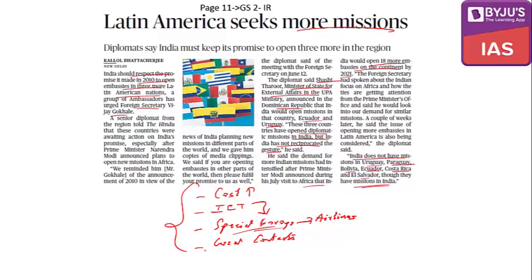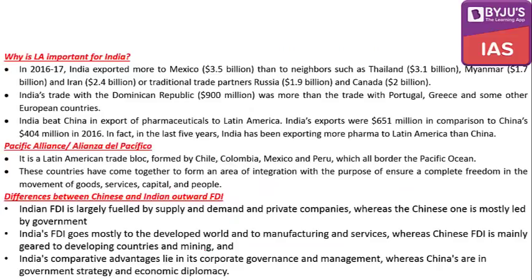However, looking at the other side — why an embassy IS required — let's examine the statistics. In 2016-17, India exported more to Mexico than to neighbors like Thailand, Myanmar, and Iran, and traditional partners like Russia and Canada. Mexico received about $3.5 billion in exports, more than Russia and Canada. India's trade with Dominican Republic also exceeded trade with Portugal and some other European countries.